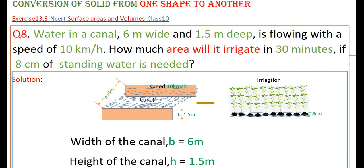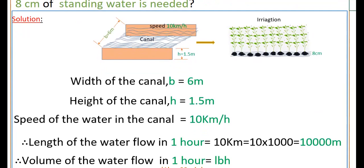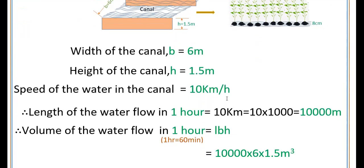Speed of the water in the canal is 10 kilometers per hour, that means in one hour the water flows 10 kilometers in length. Therefore, length of the water flow in one hour is equal to 10 kilometers. Converting to meters: 10 into 1000, that is 10,000 meters. So length of the water flow in one hour is 10,000 meters.